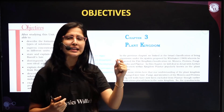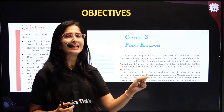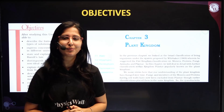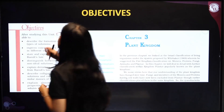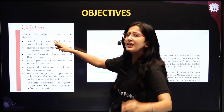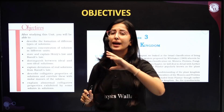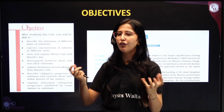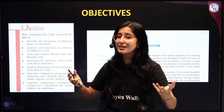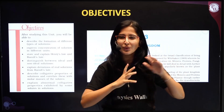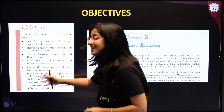Let's look at the important things in the text. For chemistry and biology, you can clearly see the objectives — for example, 'describe the formation of different types of solution,' where formation relates to types of solution, and 'express concentration of solution in different units.' So the objectives tell you the key topics to cover.